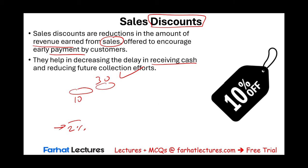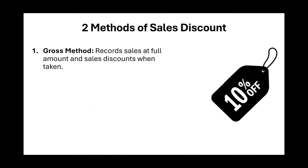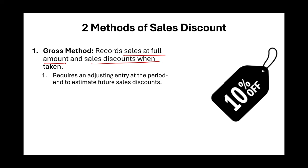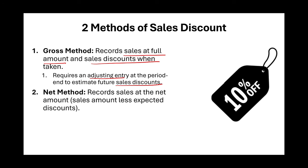There are two methods to record sales discounts. The gross method means you record sales at the full amount and record the sales discount only when taken. This method may also require an adjusting entry at the end of the period to estimate future sales discounts. Alternatively, the net method records the sale at the net amount upfront, assuming the customer will take the discount.